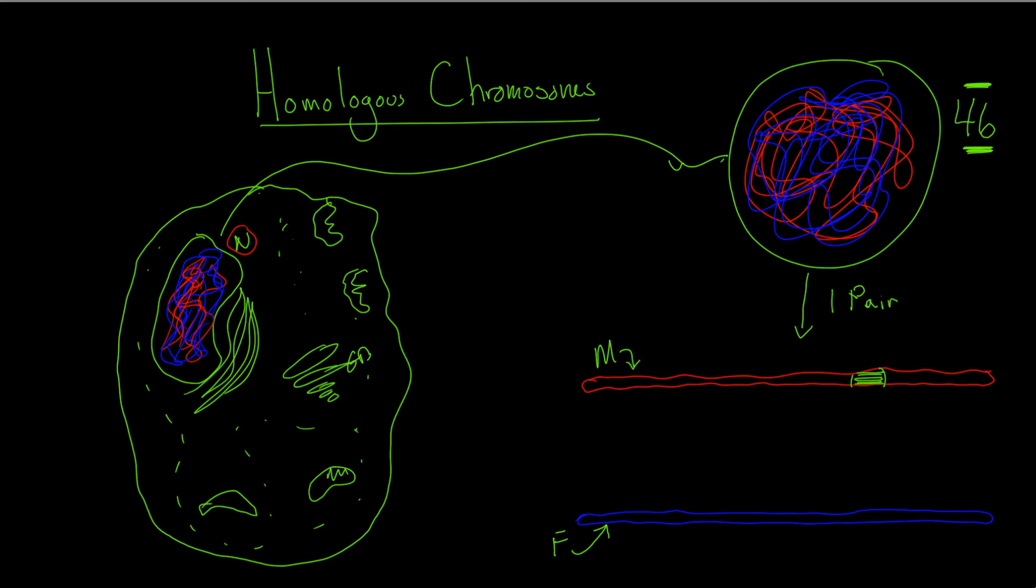Your mother would have a region which would have whichever allele she contributed for blood type, and your father would also have a region where that blood type allele would reside from him. And these are the allele pairs that lead to some traits, for example, blood type. So those are homologous chromosomes.